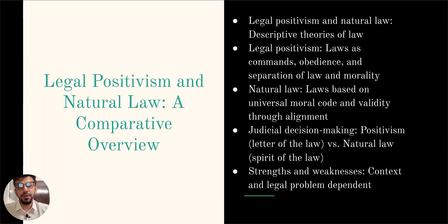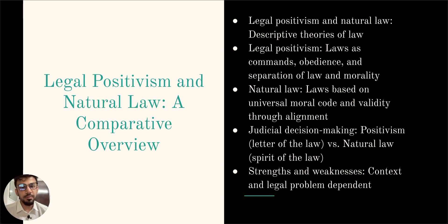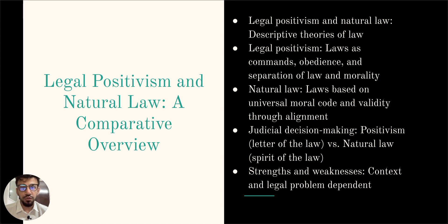Let's discuss the two descriptive theories of law: legal positivism and natural law. These theories focus on identifying what the law is, as opposed to what it ought to be. Legal positivism, as described by John Austin, argues that laws are commands issued by a sovereign and backed by threats. The validity of a legal system is determined by whether it is habitually obeyed, and this theory separates what the law is from what the law ought to be. It does not take into account morality or justice.